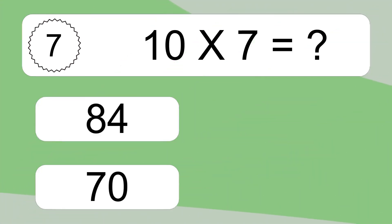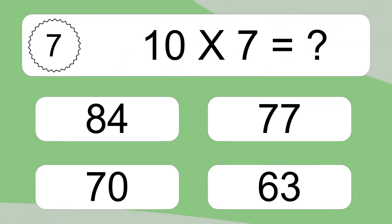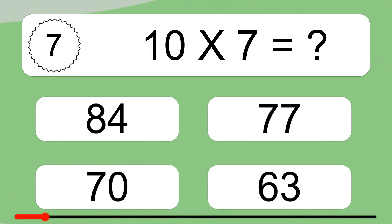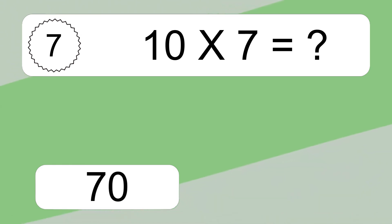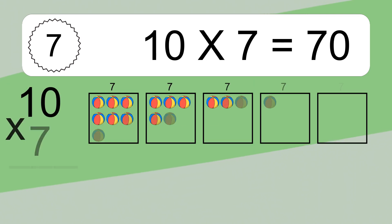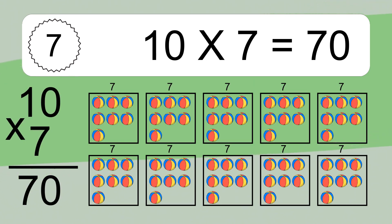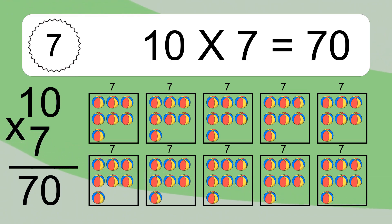10 times 7 equals what? 10 times 7 equals 70. We have 10 boxes and each box has 7 colorful balls inside. If you count all the balls in all the boxes together, you will have 10 times 7 balls. This equals 70 balls.